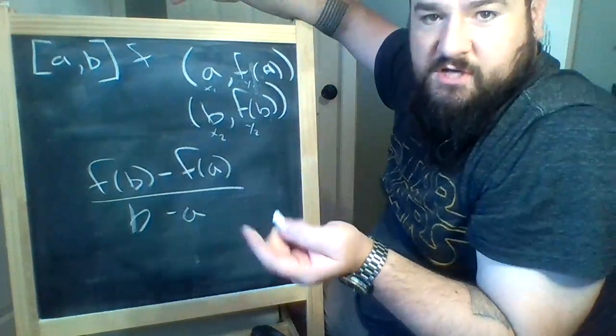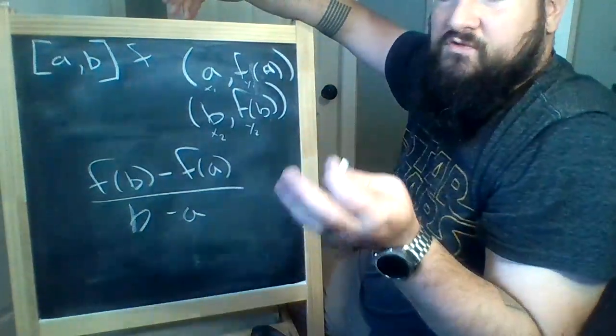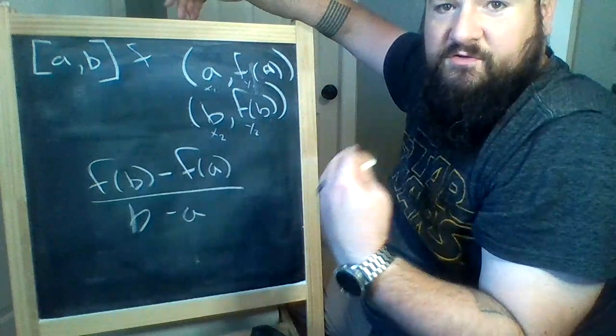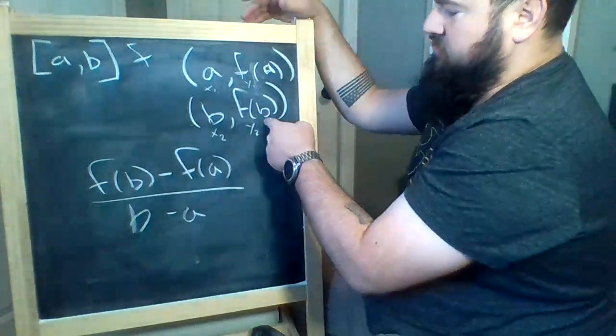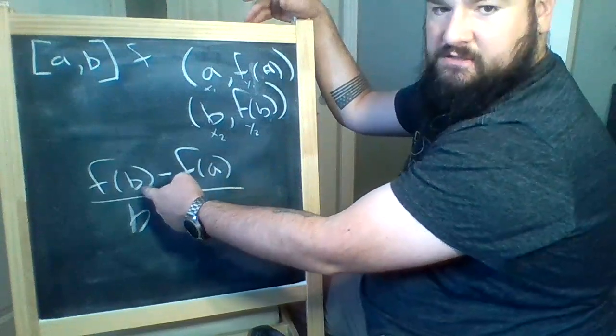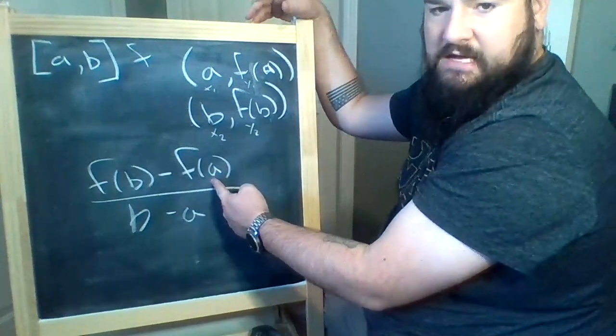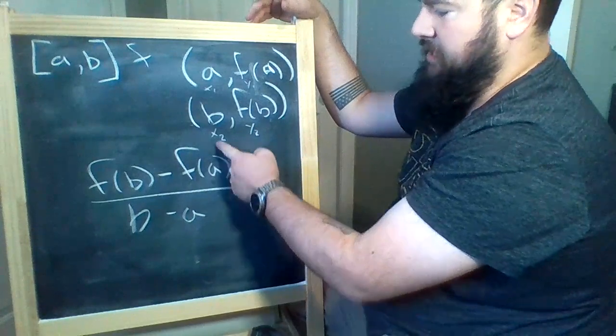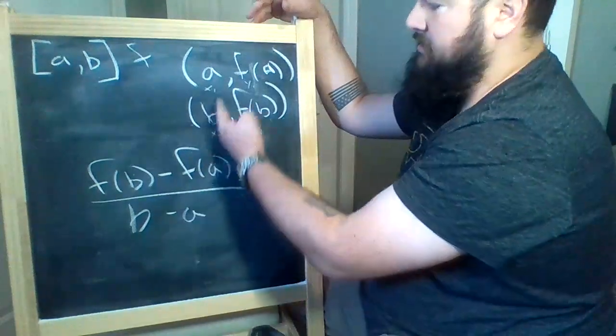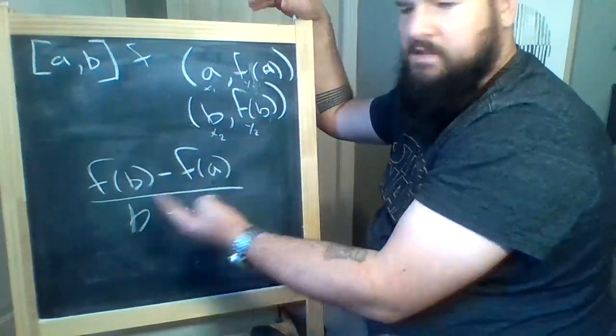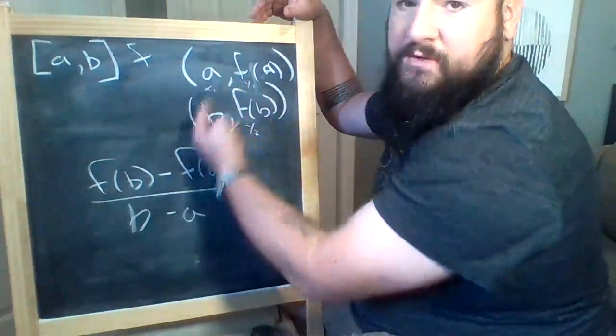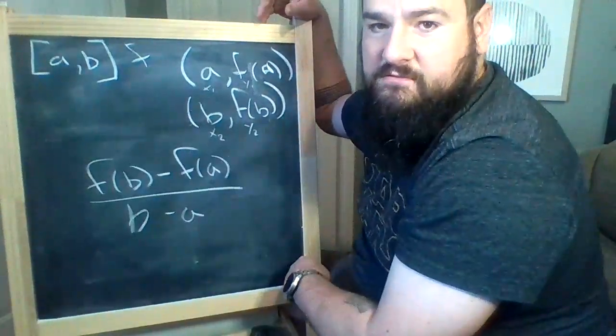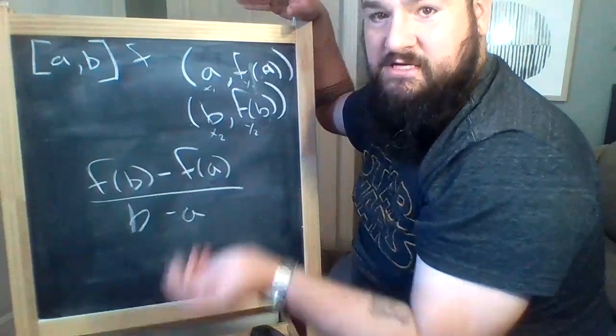So slope formula that we just talked about is m equals y₂ minus y₁ all divided by x₂ minus x₁. So y₂ is f(b), minus y₁ is f(a), all divided by x₂ minus x₁. Average rate of change is just the slope between the two endpoints on this interval of our function. That's it. That's all it is.